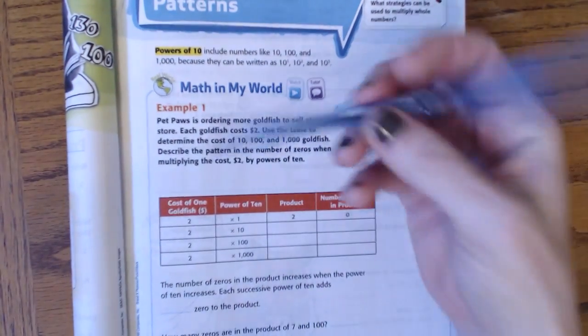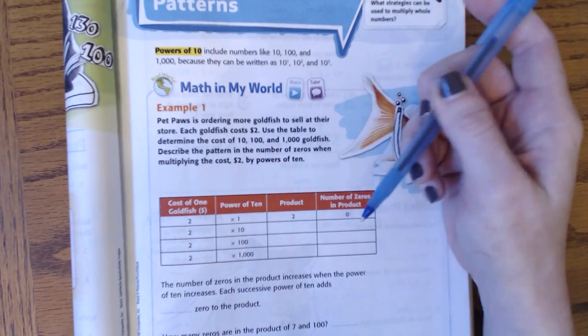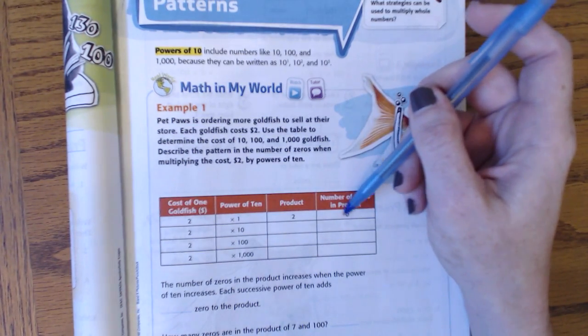All right, so we have 2 times 1. That's 2. You know that. How many zeros are in that product? None, right?